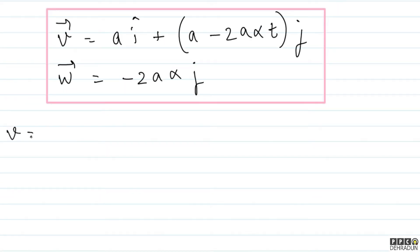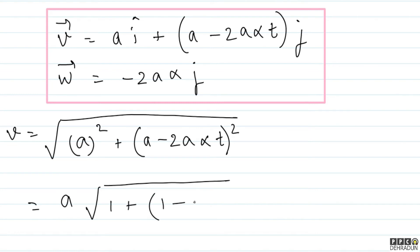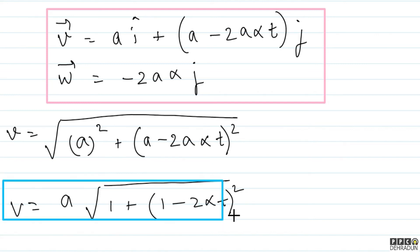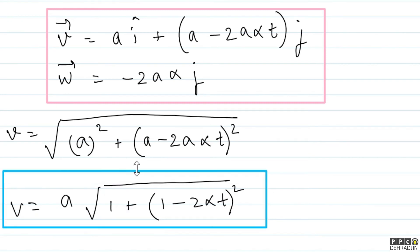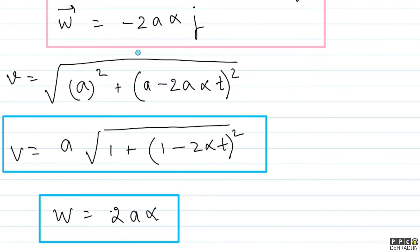The question asked for the magnitude of velocity: |v| = √(a² + (a − 2aαt)²) = a·√(1 + (1 − 2αt)²). For the magnitude of acceleration, since there is no x-component, |w| = 2aα.